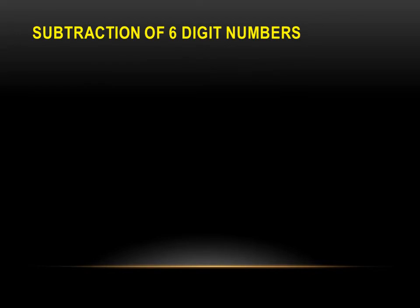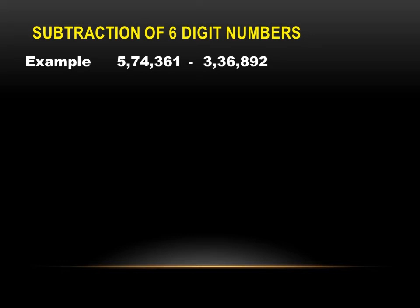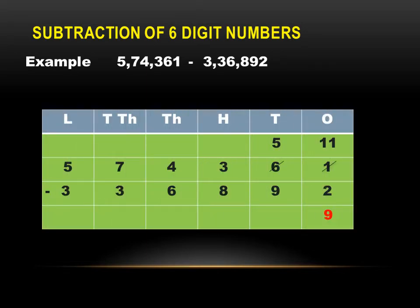Now let's understand the subtraction of six-digit numbers. Take the example of five lakh seventy-four thousand three hundred sixty-one minus three lakh thirty-six thousand eight hundred ninety-two. Write these numbers in the Indian place value chart, starting from right to left, from ones to lakhs. Now let's start from the ones column.